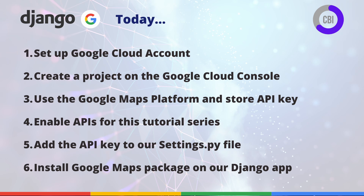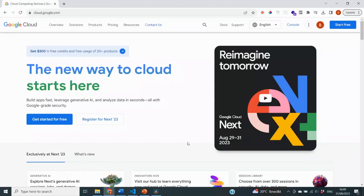We also need to make some changes to our Django project. We will start by adding the API key generated by the Google Maps platform to our settings.py file, and as the last task we will install the Google Maps package with the Python client on our Django application.